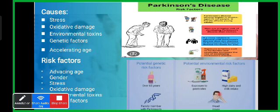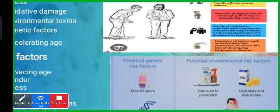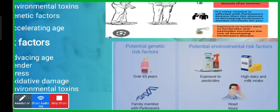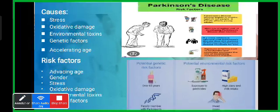Accelerating age is also a cause, as degeneration starts in the body with age. Risk factors include being over 65 years of age, having family members with Parkinson's disease, environmental exposure to pesticides, high daily milk intake, head injury, and male gender — men are more likely to develop Parkinson's disease.